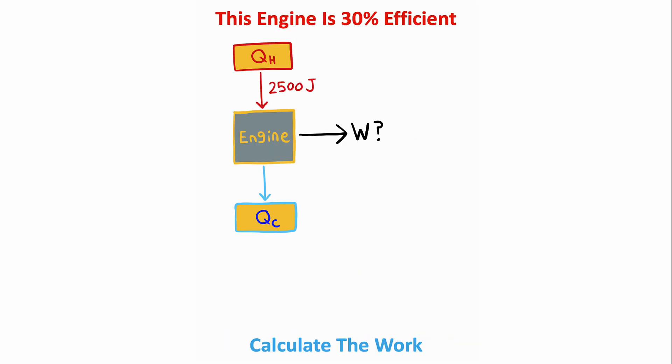We can calculate the work done by this heat engine. This engine is 30% efficient, and to calculate the efficiency of an engine, you need to take the work done by the engine and divide it by the heat absorbed from the hot reservoir. We are given the efficiency of the engine, which is 30%. As a decimal, this is equal to 0.3. The heat absorbed from the hot reservoir is 2500 joules. I can use some quick algebra to isolate the work by itself. To calculate the work done by the engine, it's going to be 2500 joules times 0.3, which is equal to 750 joules of work.